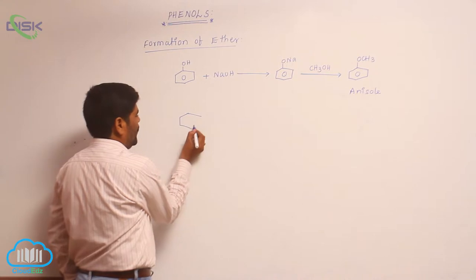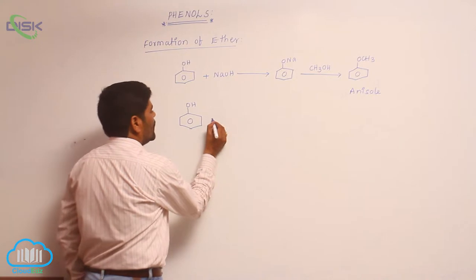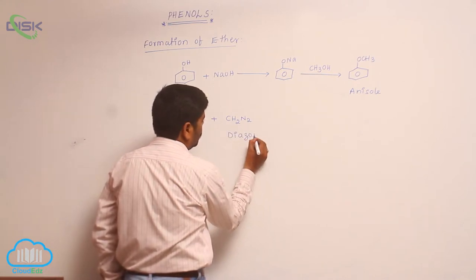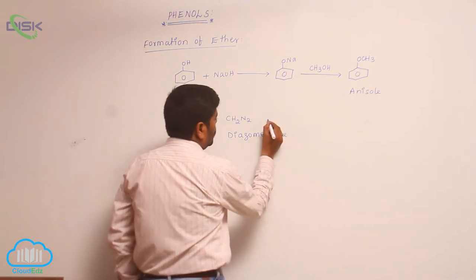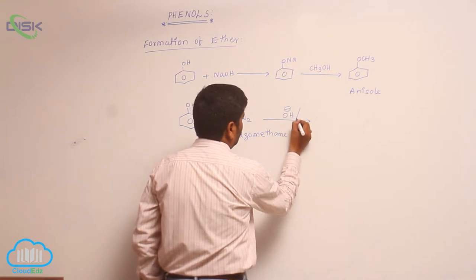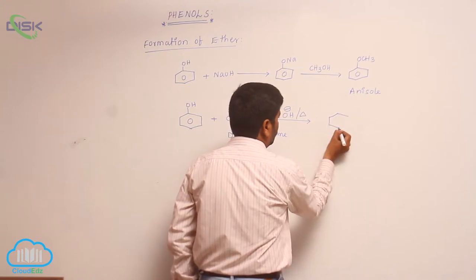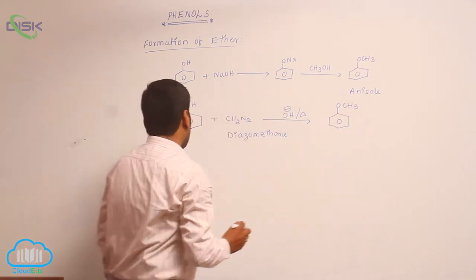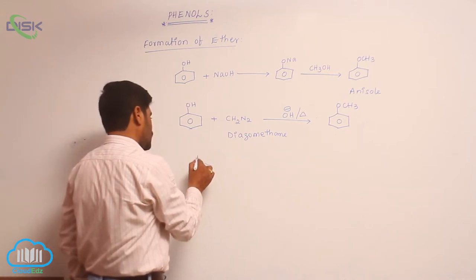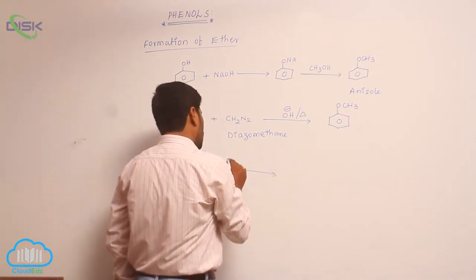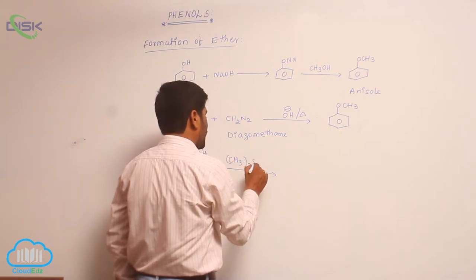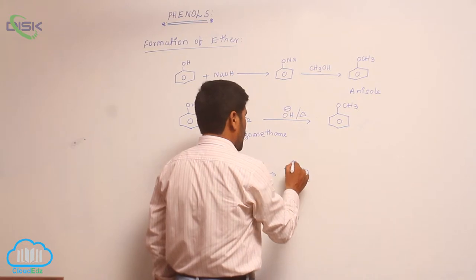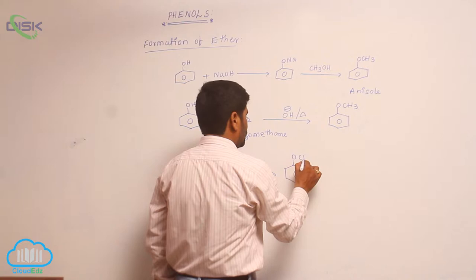The second reaction is phenol reacts with diazomethane in the presence of basic medium to form anisol. Phenol also reacts with a good methylating agent like dimethyl sulfate in the presence of basic medium to form anisol.